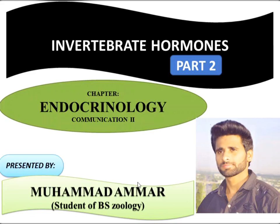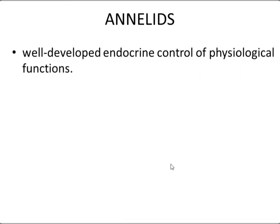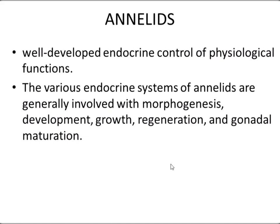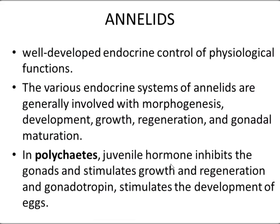Annelids have well-developed endocrine control of physiological functions. The various endocrine systems of annelids are generally involved with morphogenesis, development, growth, regeneration, and gonadal maturation. In case of polychaetes, the juvenile hormone inhibits the gonads and stimulates growth and regeneration.